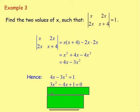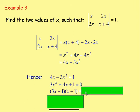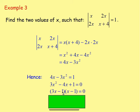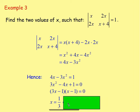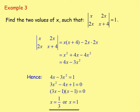Factorizing gives us (3x minus 1)(x minus 1) equals 0. If 3x minus 1 equals 0, then x equals one third. If x minus 1 equals 0, then x equals 1. So those are the two values of x. That is working out the determinant of a 2x2 matrix.